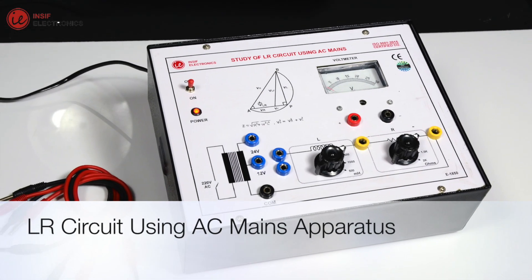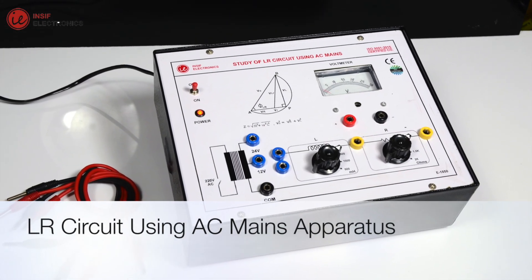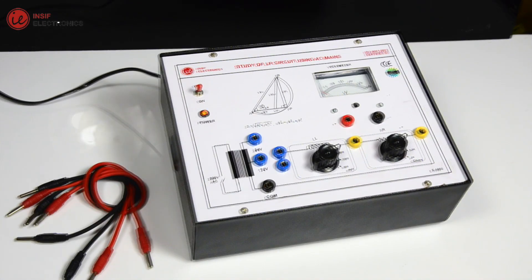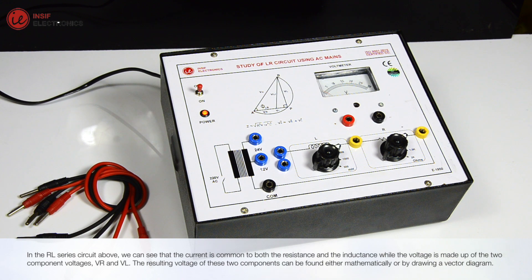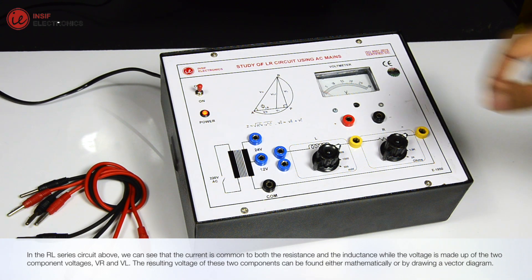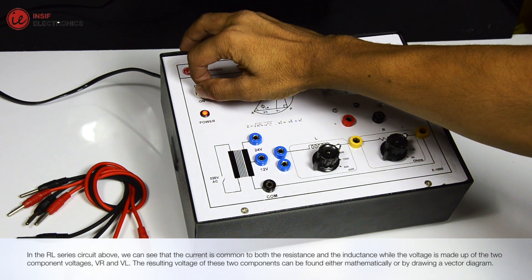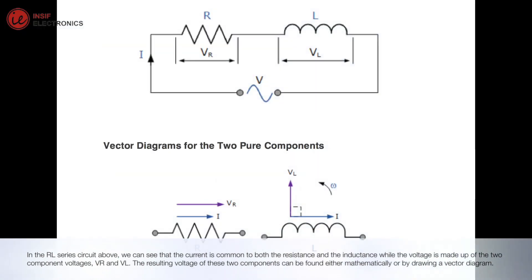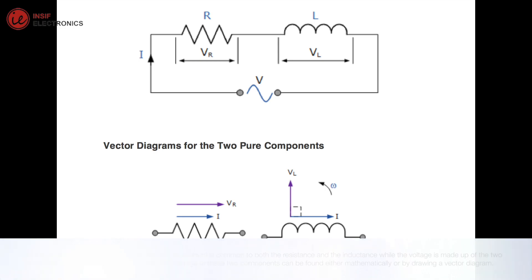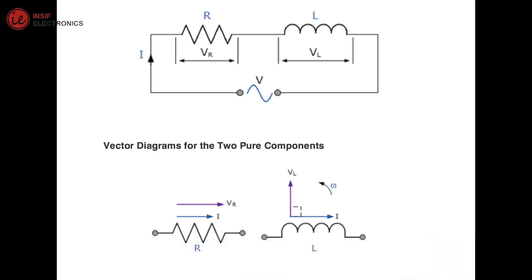In the RL series circuit, we can see that the current is common to both the resistance and the inductance, while the voltage is made up of the two component voltages, Vr and Vl. The resulting voltage of these two components can be found either mathematically or by drawing a vector diagram.